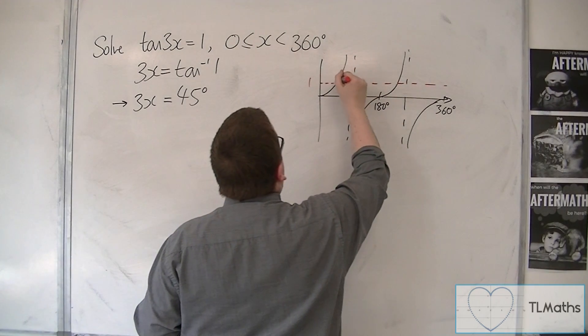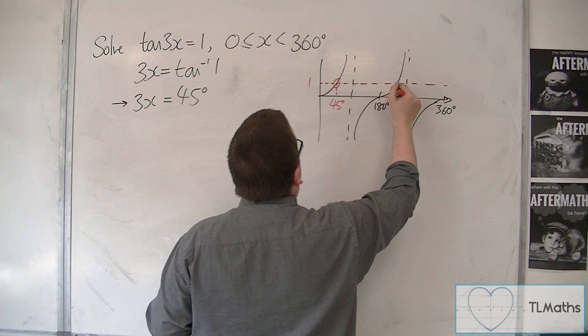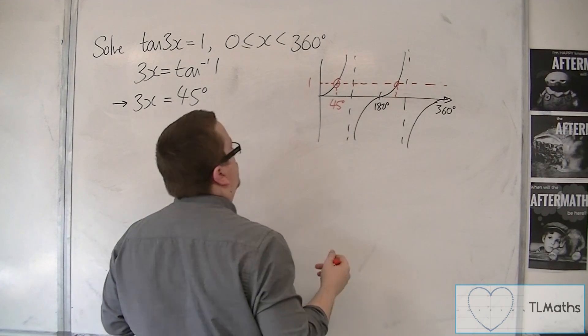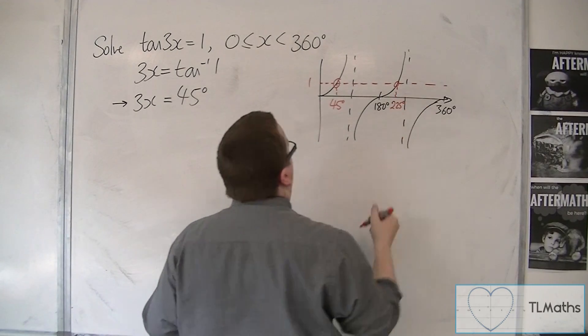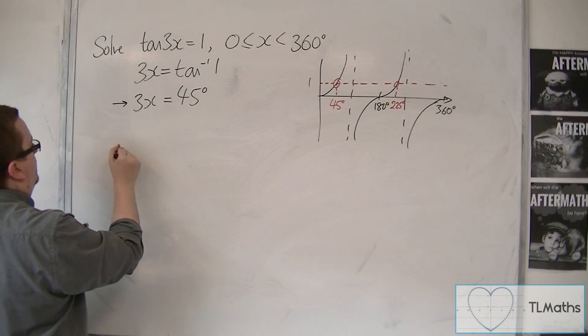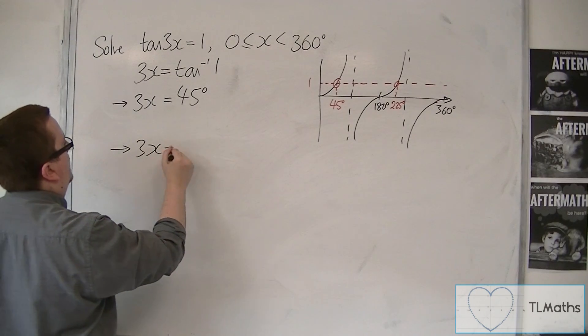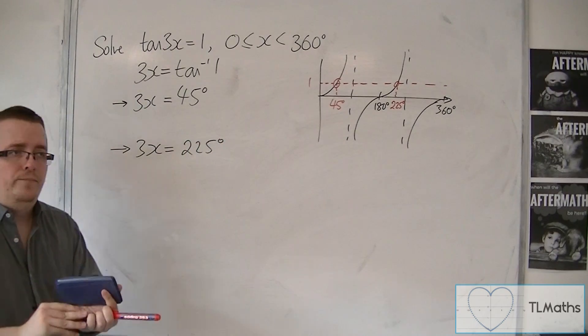So we have 1. So this is our first solution at 45 degrees. So the second solution here will be 180 degrees plus 45, so 225 degrees. So our second part is 3x = 225 degrees.